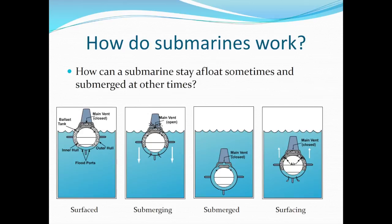Then how do submarines work? How can they stay afloat sometimes and be submerged other times? Submarines have ballast tanks that are used to help it surface and submerge. When the submarine is at the surface, its ballast tanks are filled with air. To submerge, the air is released and the ballast tanks fill with water. When it's time to surface again, the water is released and the ballast tanks are filled with air again.